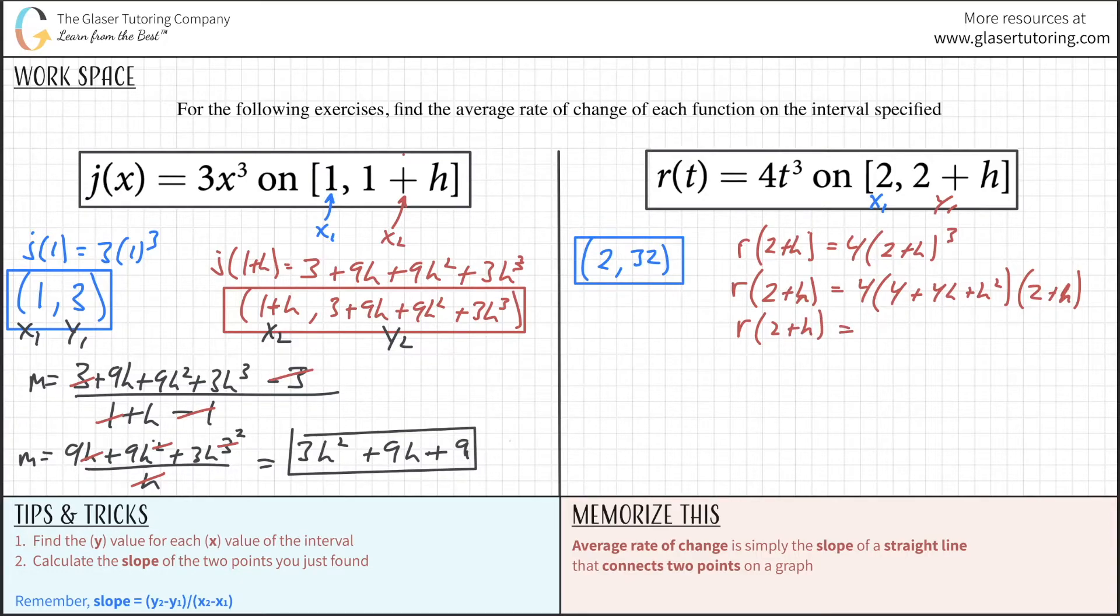I did all those foiling steps before on the first problem, so I'm moving faster. This will be... I'll distribute here. This is 8 plus 4h, then multiply by 2 to get 8h plus 4h squared. Then multiply by h to get 2h squared plus h cubed.